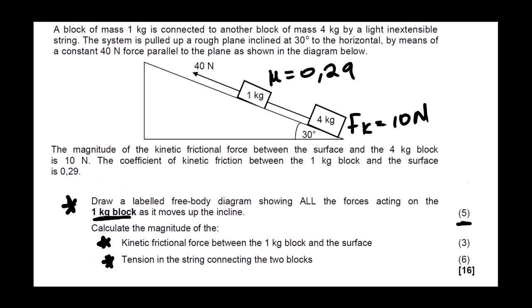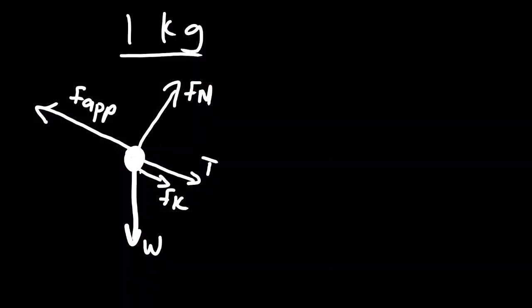Looking at our diagram, we can see we have the applied force, and then the normal force in this direction. Then we have weight, we have kinetic friction, and then we have tension. So our free body diagram will be of this nature. This is the actual free body diagram of the 1 kg block.